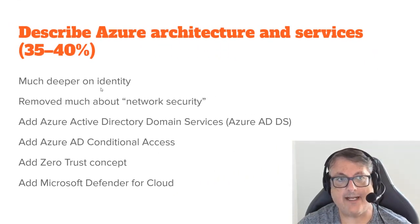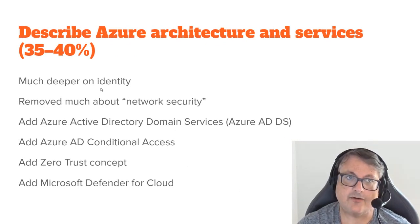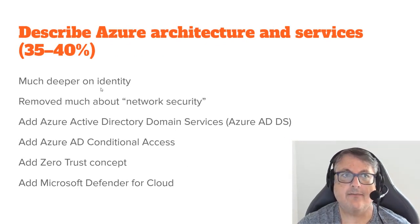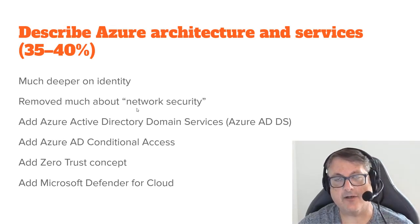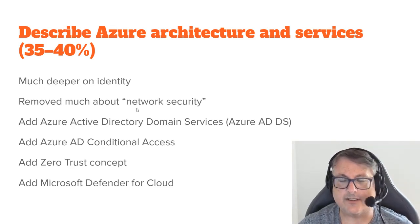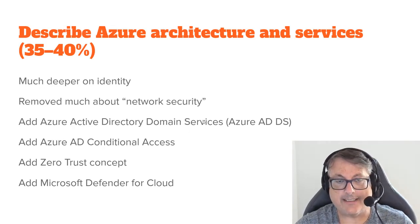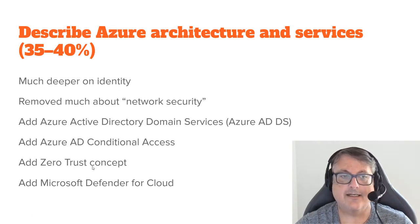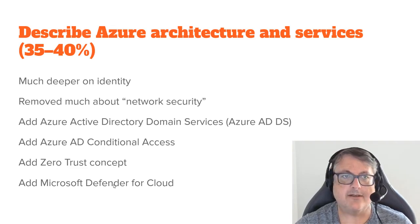Continuing with the same section, there's a big section about Azure Active Directory. Active Directory was on the previous test, but this gets into more detail. All that network security stuff has been removed — you don't have to know DDoS, firewalls, or network security groups. On identity, they're now talking about domain services, conditional access, and the concept of zero trust. Defender for Cloud, a relatively newly named product, is also included.